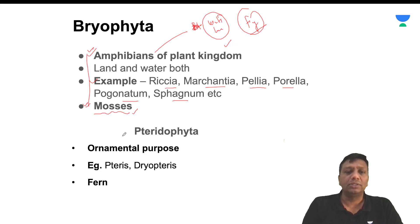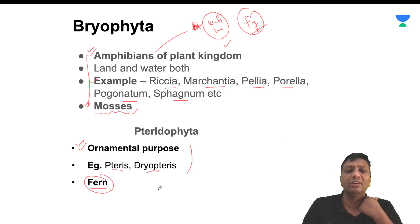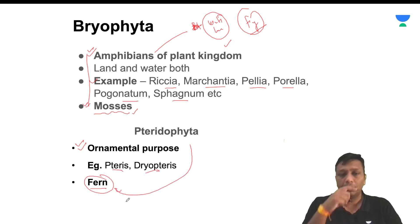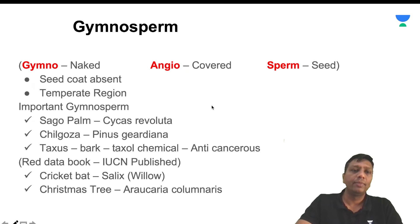Pteridophytes are another group. They are mostly used for ornamental purposes — ferns are generally what we call pteridophytes. You will commonly see these in gardens and ornamental areas.